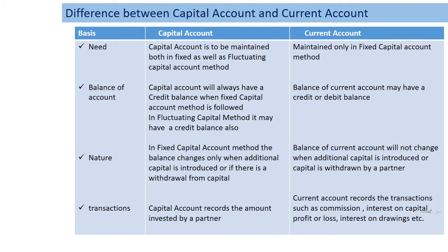Last class, while we learned the methods of maintaining the capital account, we studied that in the case of fluctuating capital, we have to prepare only the capital account. But in the case of the fixed capital method, we have to prepare two accounts — the capital account as well as the current account. So, the capital account is prepared in both methods, but the current account is maintained only in the fixed capital method.